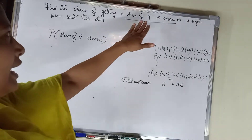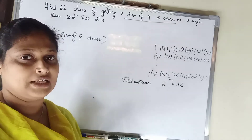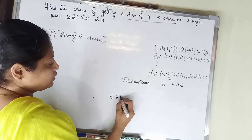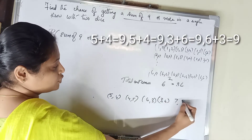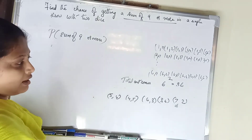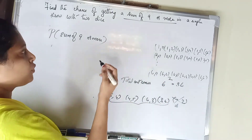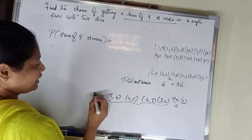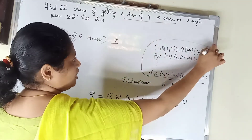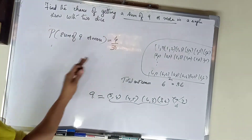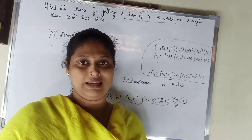The first question is: find the probability of a sum of 9 or more. With 2 dice giving 36 total outcomes, I am going to find pairs that give a sum of 9. For sum of 9: (3,6), (4,5), (5,4), (6,3) — that is 4 favorable outcomes.